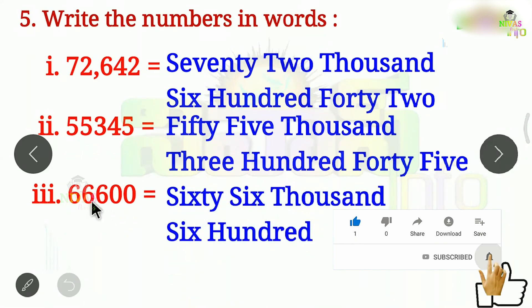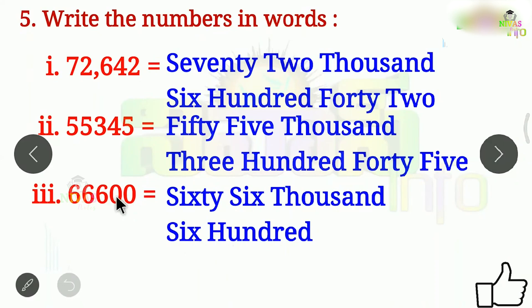That is 1,000. Then 600. Then it is 0, 0 — if it is 0,0 then it is not 0,000. It is 100.